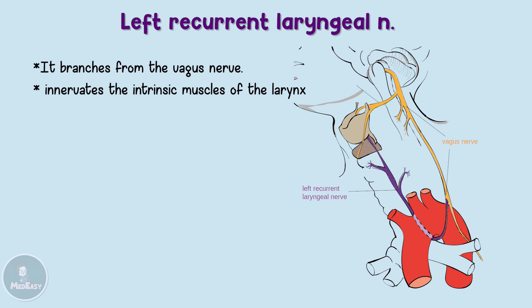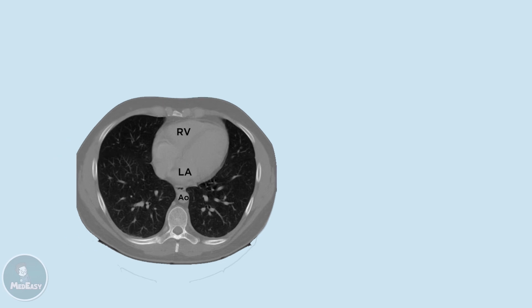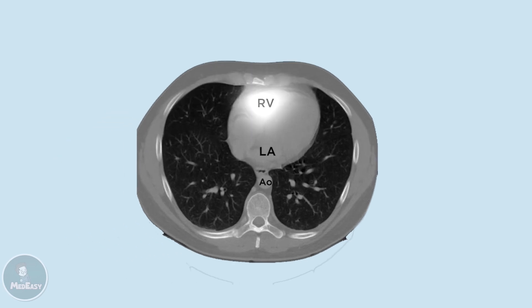If you remember from laryngeal anatomy, the extrinsic muscles are responsible for moving the larynx — for example, when you swallow — whereas the intrinsic muscles are responsible for movements of the vocal cords and voice production. Because the aortic arch is immediately adjacent to the left atrium and the left recurrent laryngeal nerve loops around it, enlargement of the left atrium can damage the nerve supplying the intrinsic muscles, leading to hoarseness of voice. We also note that the right ventricle is the most anterior part of the heart, which is why it's most commonly implicated in traumatic injuries.